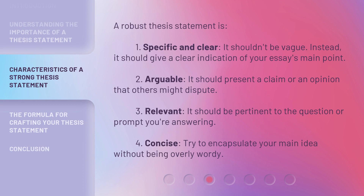A robust thesis statement is: 1. Specific and clear — it shouldn't be vague; instead, it should give a clear indication of your essay's main point. 2. Arguable — it should present a claim or an opinion that others might dispute. 3. Relevant — it should be pertinent to the question or prompt you're answering. 4. Concise — try to encapsulate your main idea without being overly wordy.